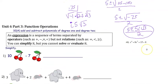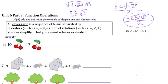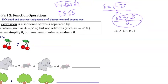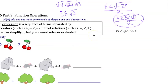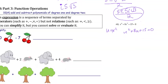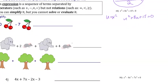Let's do number 48. We have x⁴ + 8x² + 15 = 0. To factor and solve this, we use u-substitution. We let u = x², so the equation becomes u² + 8u + 15 = 0, and we factor it the same way we've been factoring these expressions.